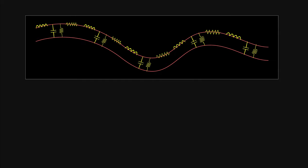In part 1 we saw that the transmission line is nothing more than series inductance and resistance and shunt capacitance and conductance distributed along the wire. Assuming the wires are perfect conductors separated by a perfect dielectric, then the series resistance and the shunt conductance can be ignored from the model.